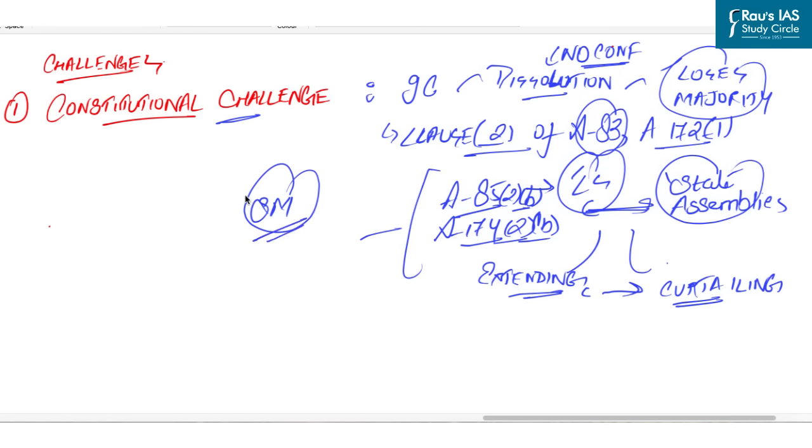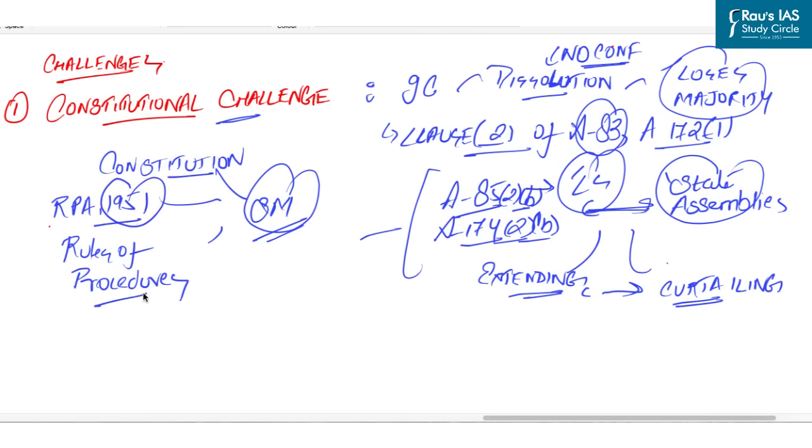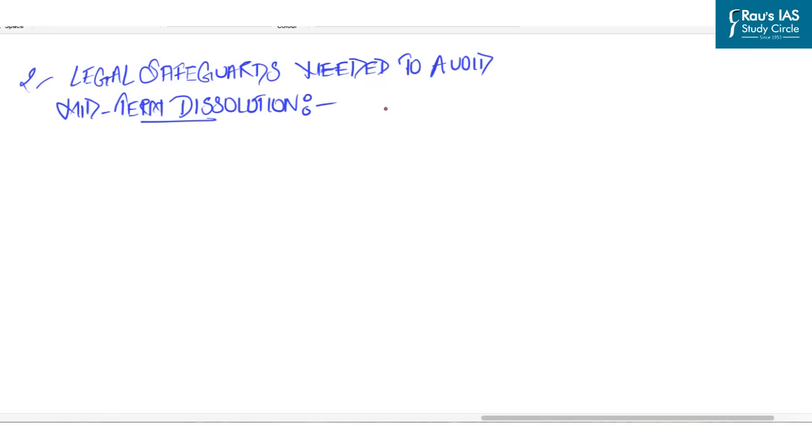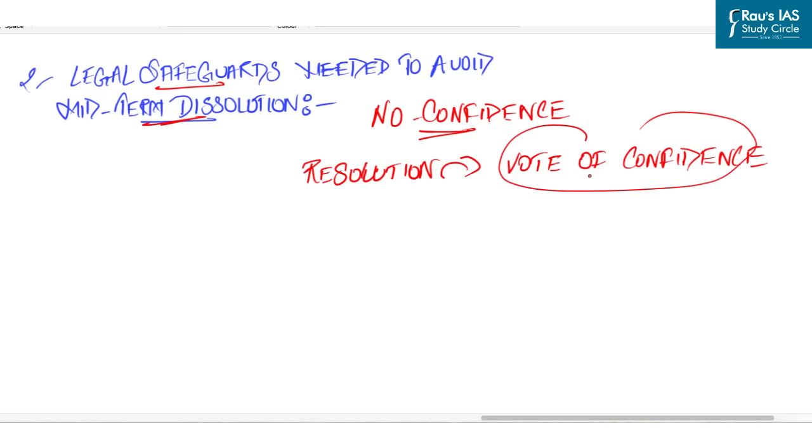In such a case, simultaneous elections could not be held within the existing framework of the constitution. These could be held together through appropriate amendments to constitution, then representation of the people act 1951 and rules of procedures of Lok Sabha and state assemblies. Since it will affect the federal character, at least 50% of the states will require to ratify the constitutional amendments. Now let's see legal safeguards needed to avoid midterm dissolution. Even if the terms are synchronized as one time measure, we will still need adequate legal safeguards to avoid midterm dissolution. For maintaining the electoral cycle, some countries have legal provisions. For example, no confidence motion to be brought up against the government in office. The proposed resolution should also contain a constructive vote of confidence in an alternative government with a named leader to head it.